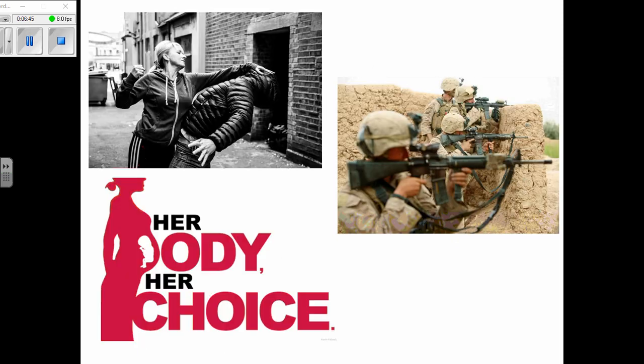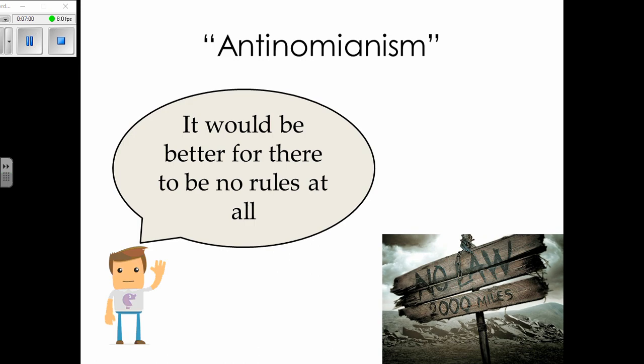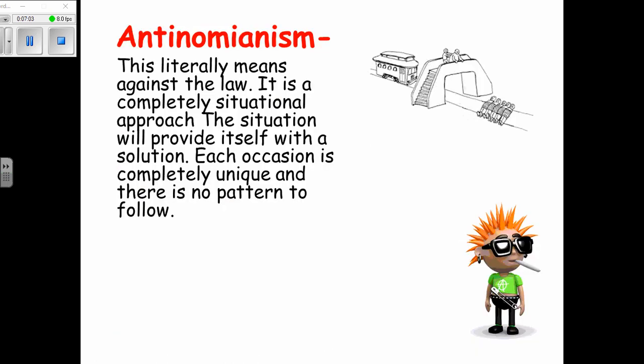For example, if someone wishes to have an abortion, the legalist might say no because the Bible says do not kill. The anti-nomianist — well, we don't really know what they would say. It depends completely on the situation; there are no principles and no laws at all. Fletcher's book discusses these two extremes: legalism and anti-nomianism.